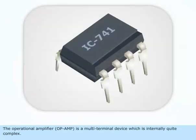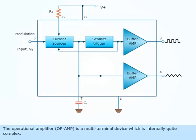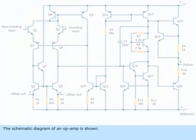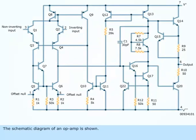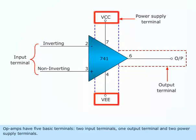The Operational Amplifier, or Op Amp, is a multi-terminal device which is internally quite complex. The schematic diagram of an Op Amp is shown. Op Amps have 5 basic terminals: 2 input terminals, 1 output terminal, and 2 power supply terminals.